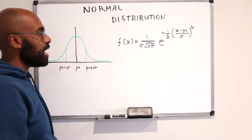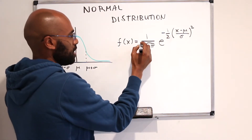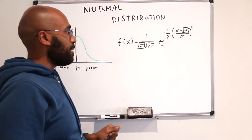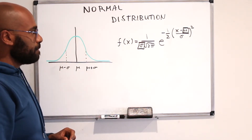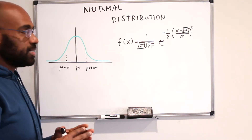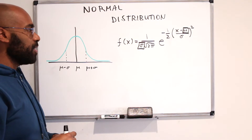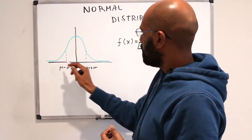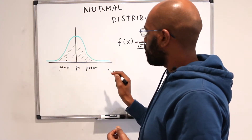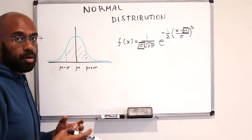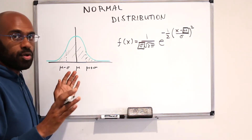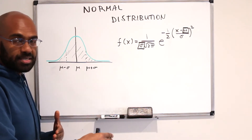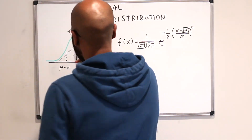Today we're going to look at this function here, which is a function in the variable x that has two parameters: the constant sigma and the constant mu. It's an exponential function that decays quite rapidly early on and then slowly decays later. This function is used quite ubiquitously in statistics, particularly in areas like the central limit theorem. One fact that must hold is that the integral under this curve has to be one if this is to model a probability distribution.